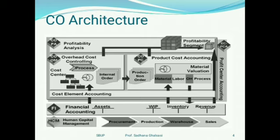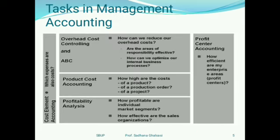Profitability Analysis is the next element, which tells you how profitable a segment or division is. Finally, there is Profit Center Accounting, where we define certain profit centers and allocate certain revenues, which are then called profits. Go through this slide to see which elements were discussed and which questions are answered through these Controlling module units.